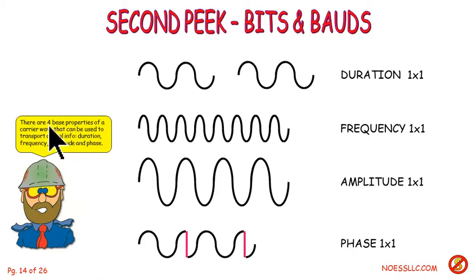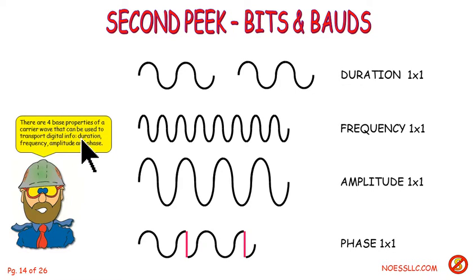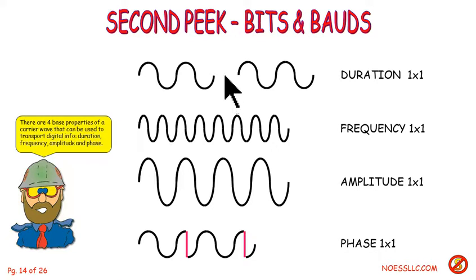There are four base properties of a carrier wave — because that's what light is, it's a wave — that can be used to transport digital information. You can change the duration, frequency, amplitude, and/or the phase. The duration is pretty straightforward: you just put the signal on and take it off — on and off, that's our one and zero.